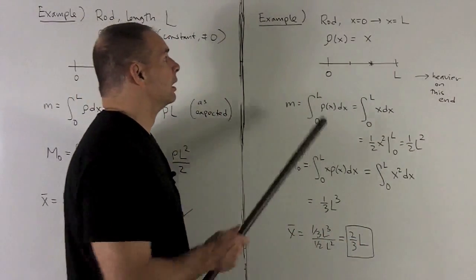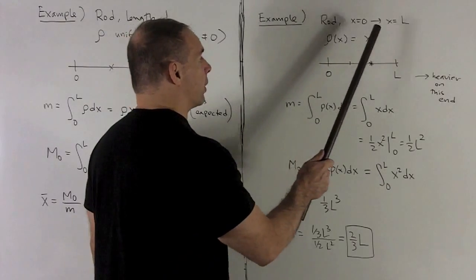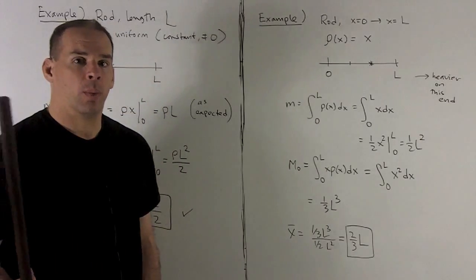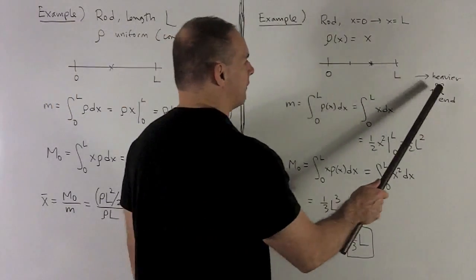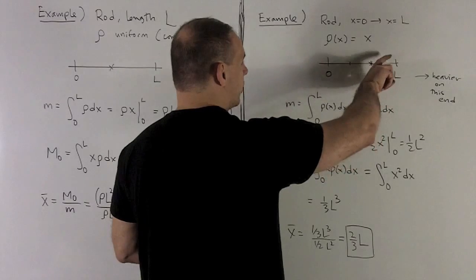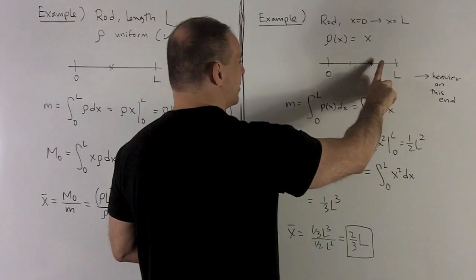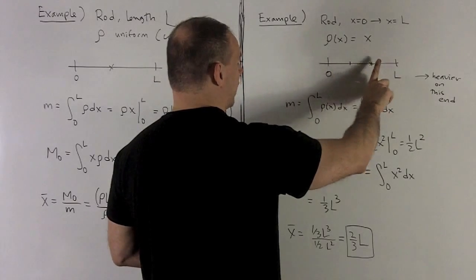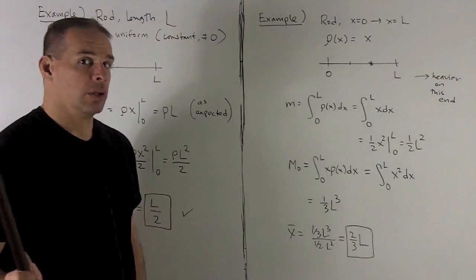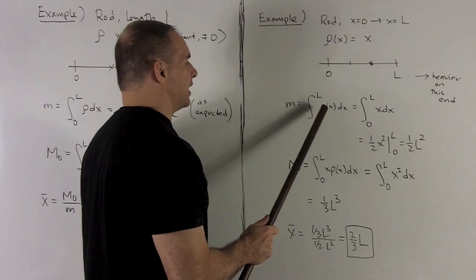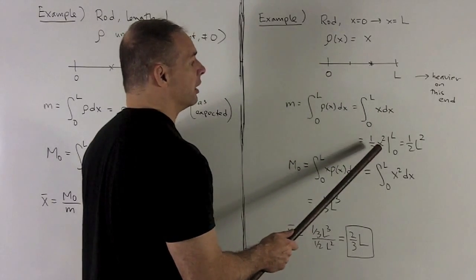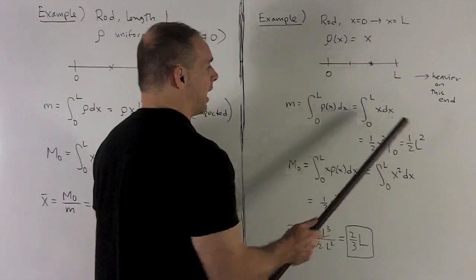Let's try something a little different. Again, a rod from x = 0 to x = L, but now the density function is ρ(x) = x. Physically, we know the rod is heavier on the right end, so to balance it, the center of mass will be shifted to the right of center. For total mass: the definite integral from 0 to L of x dx. The antiderivative is x²/2, and evaluating at L and 0 gives a total mass of L²/2.